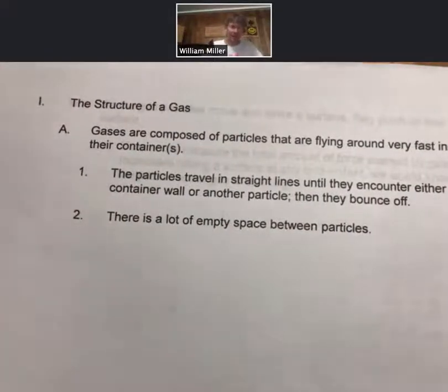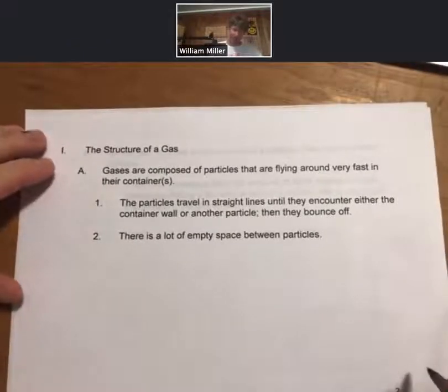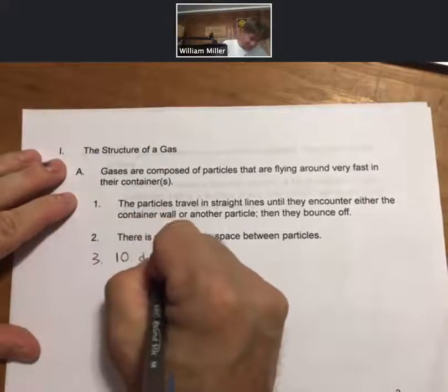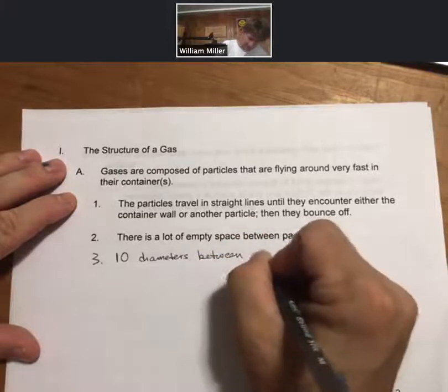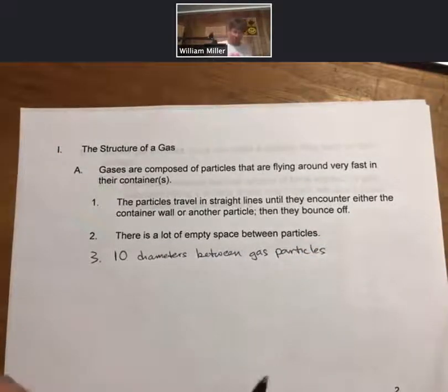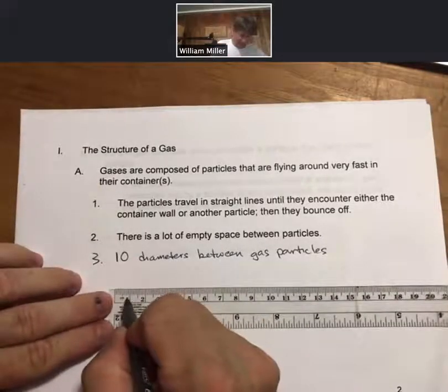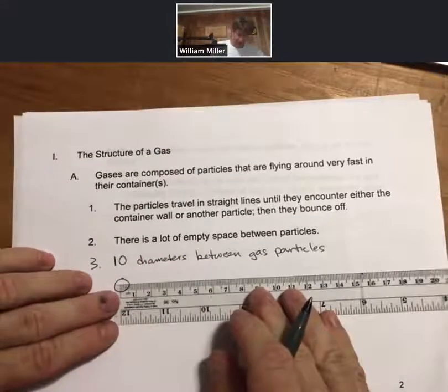Let's talk about the structure of a gas. Gases are composed of particles that are flying around very fast in their containers. The particles travel in straight lines until they encounter either the container wall or another particle, then they bounce off. There is a lot of space between the gas particles. Note number three: remember, our picture of a gas has 10 diameters between gas particles.